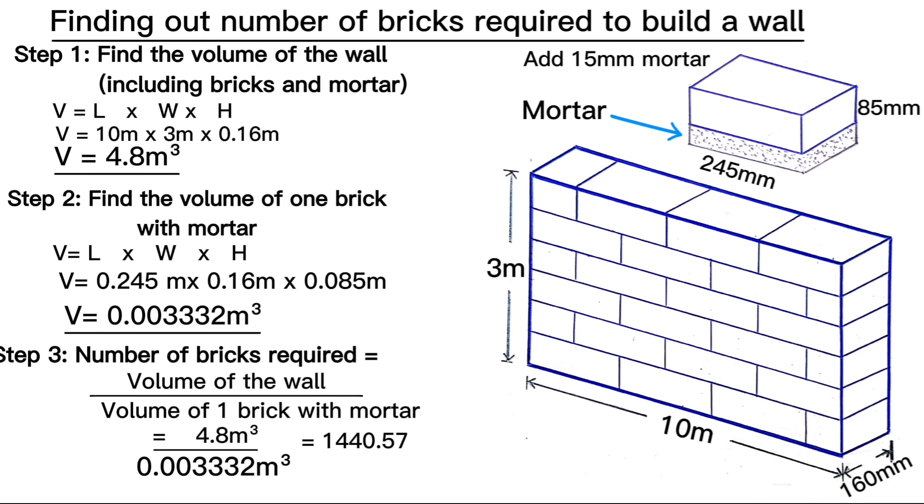Which is equivalent to 1441 bricks. In other words, for a wall of 10 meters along the length and 3 meters along its height you need 1441 bricks. This answer only covers the exact number of bricks required. On top of this figure you can add 10 to 15 percent allowance for breakages.